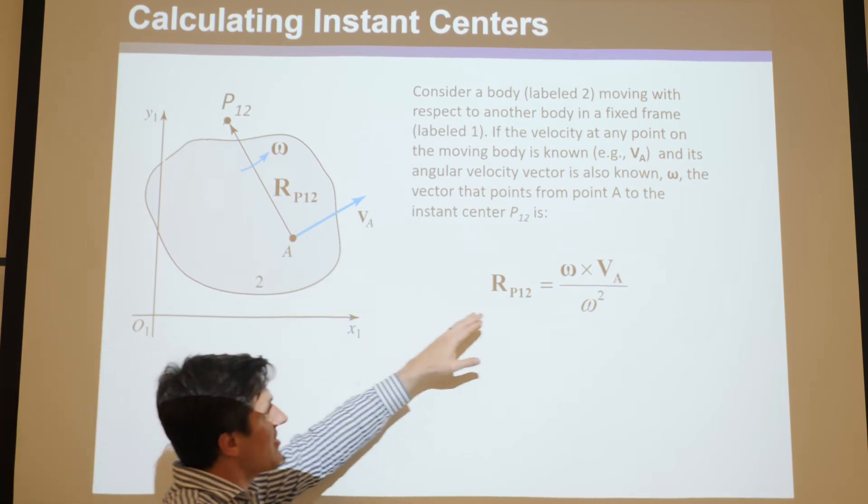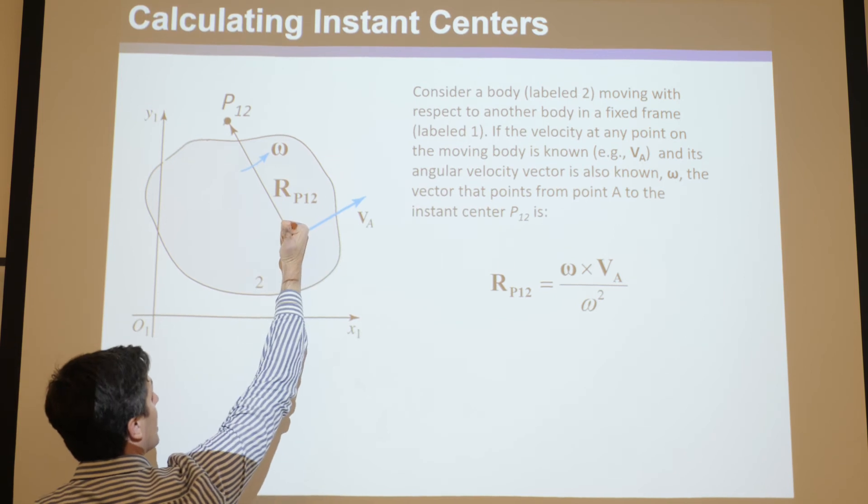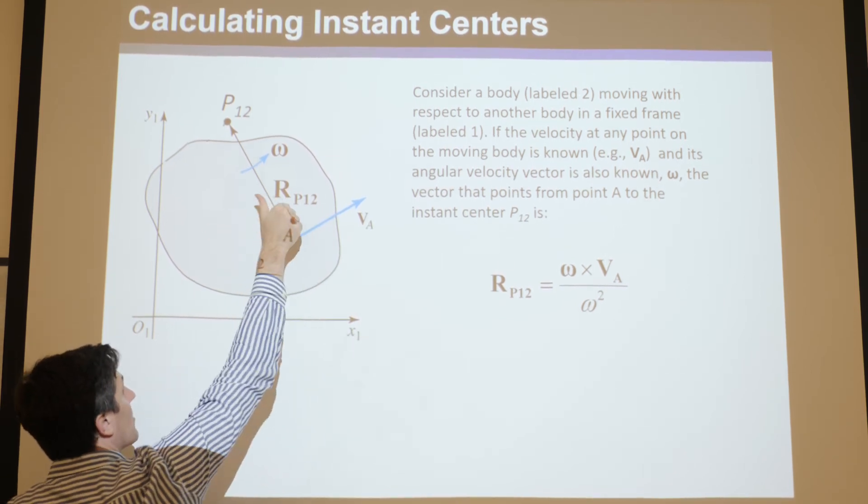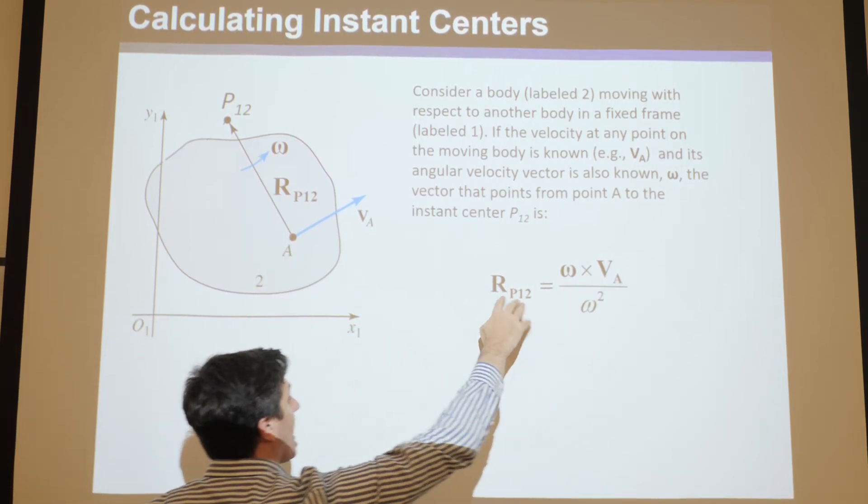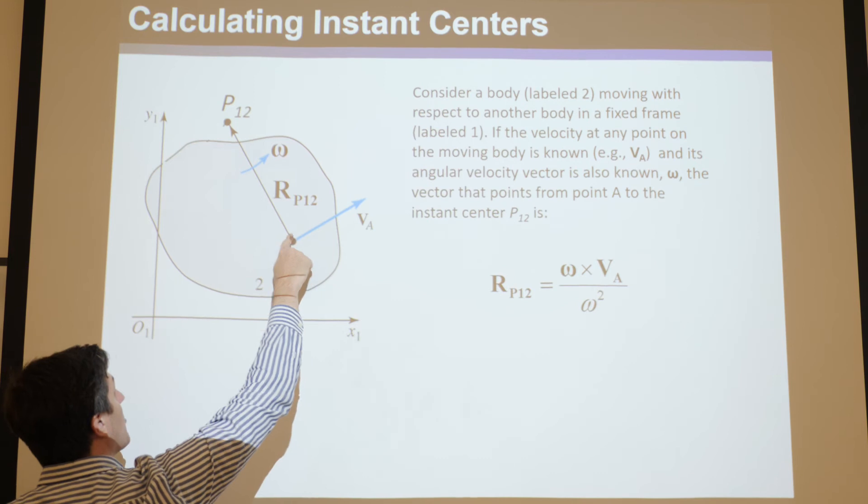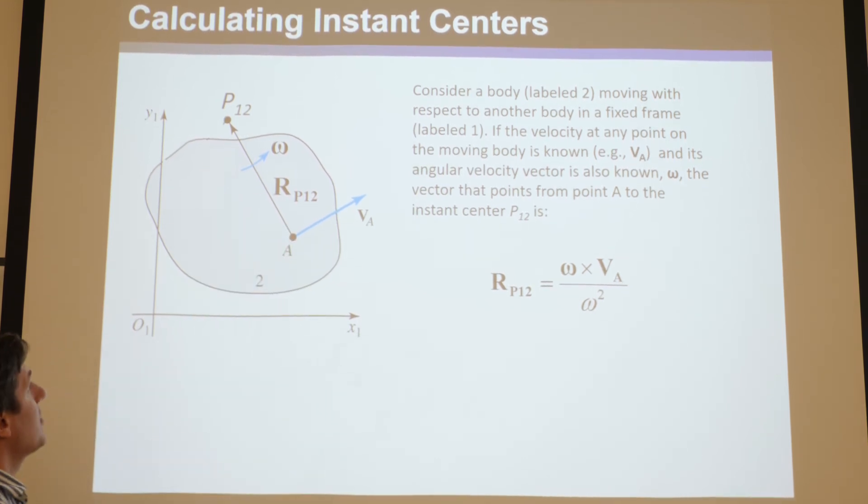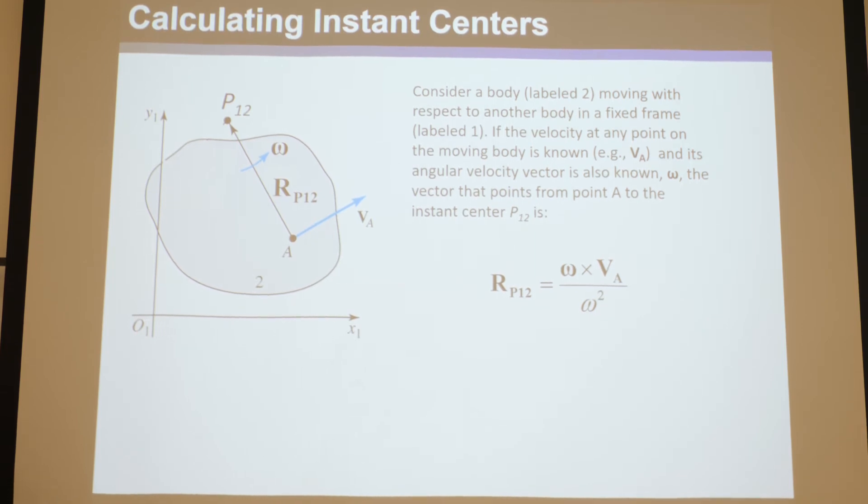And trust me, the answer is omega cross VA that I gave you, so let's check this. Omega's coming out at you, cross VA, so you take your right hand through omega cross VA, it's pointing in that direction, and then you divide it by the magnitude of omega squared. And trust me, that will give you a vector that points in this direction, the length of which points right to the instant center P1,2, or 2,1, which is where they both have the same velocity, which velocity in this case is zero, because this coordinate system is fixed.